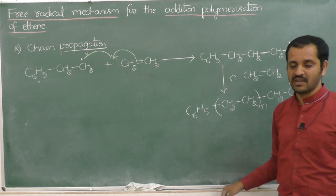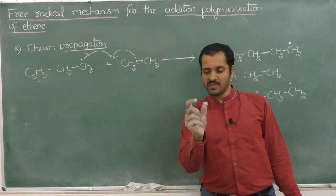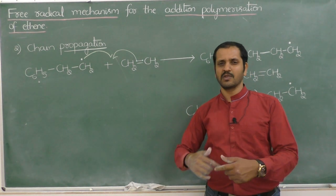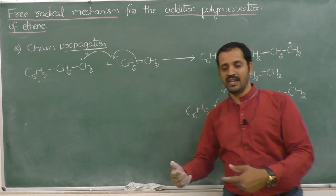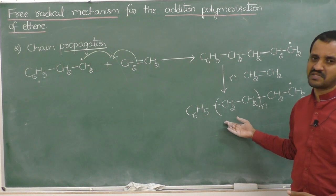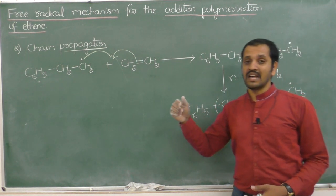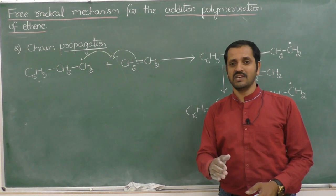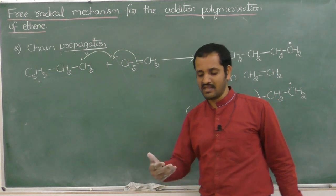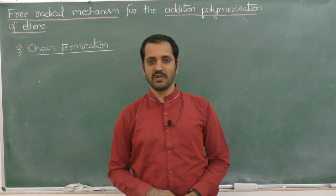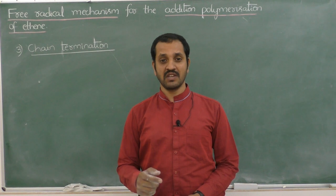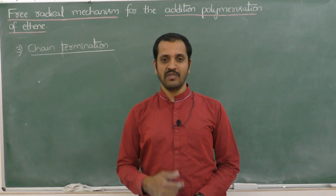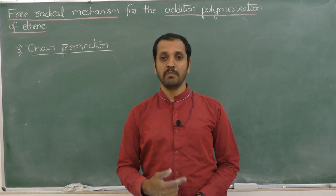The chain reaction continues: in initiation, a small free radical is generated; in propagation, progressively bigger free radicals are generated by repeated addition of ethene molecules. The third and final step is termination. In termination, the bigger free radicals generated in the propagation step combine with each other, resulting in the formation of polythene.